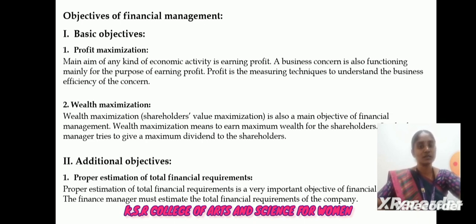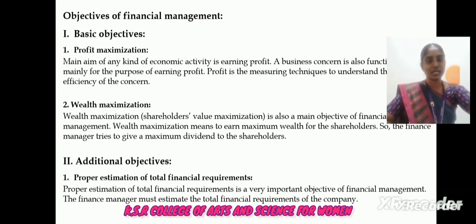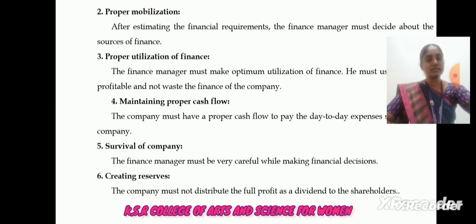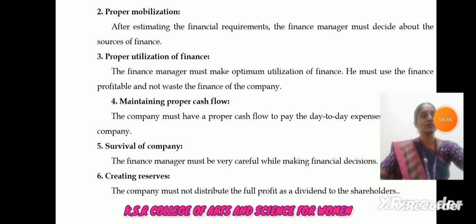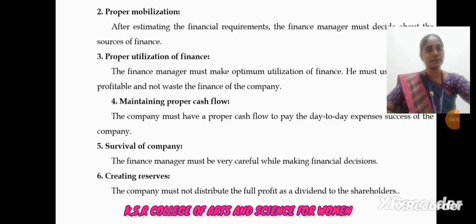The second category is additional objectives. The first additional objective is proper estimation of total financial requirements — the financial manager must estimate the total financial requirements of the company. The second is proper mobilization — after estimating the financial requirements, the financial manager must decide about the sources of finance. The third is proper utilization of finance — the financial manager must make optimum utilization of finance, using it profitably and not wasting the company's finance. The fourth is maintaining proper cash flow — the company must have proper cash flow to pay day-to-day expenses for its success.